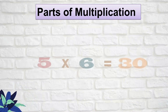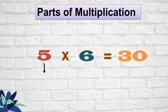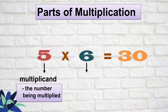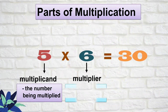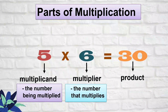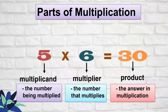Let's say we have five times six equals 30. Five is the multiplicand — the multiplicand is the number that is being multiplied. Six is the multiplier — the multiplier is the number that multiplies. And 30 is the product, which is the answer in multiplication.